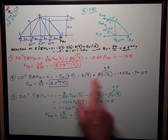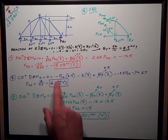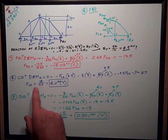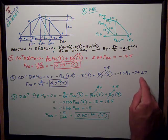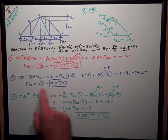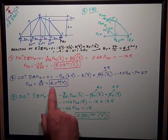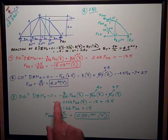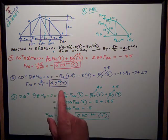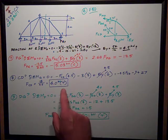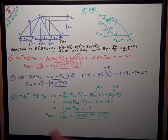Then rearranging, putting the FCD on the other side, I get FCD is equal to 18, which is the sum of those two numbers, negative 9 and 27, divided by 4.5, is equal to 4.0 kilonewtons. The positive sign means that my assumption of tension was correct, so it's in tension.